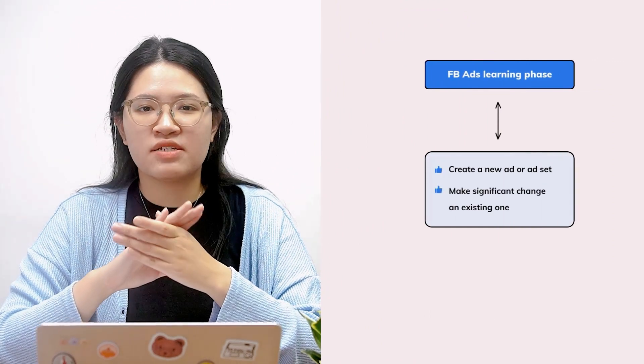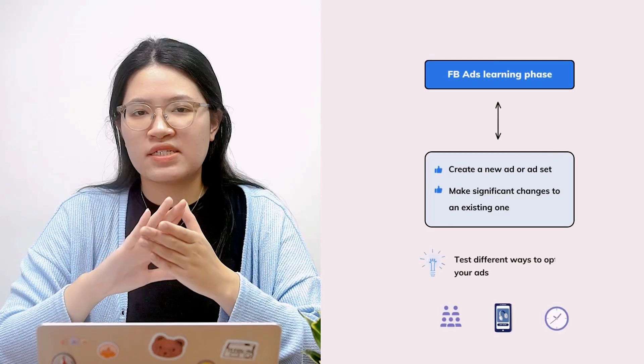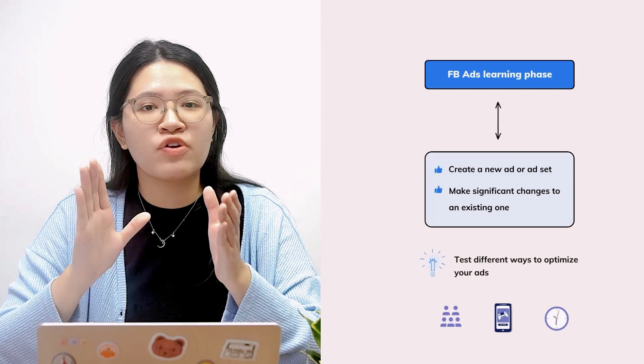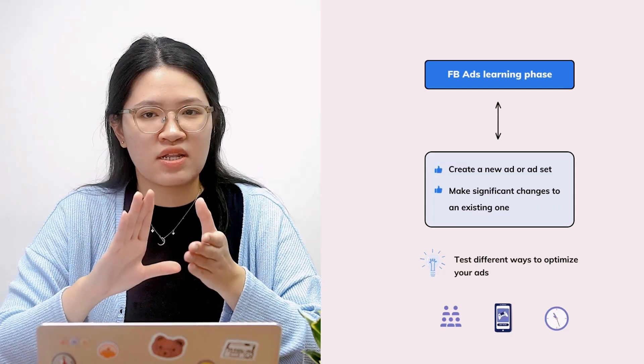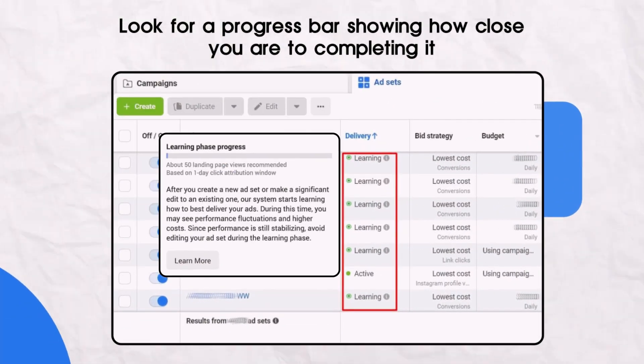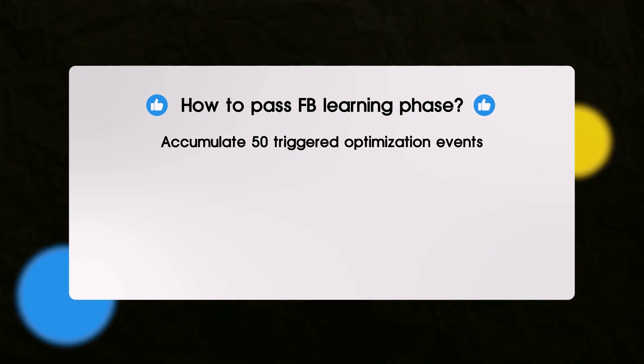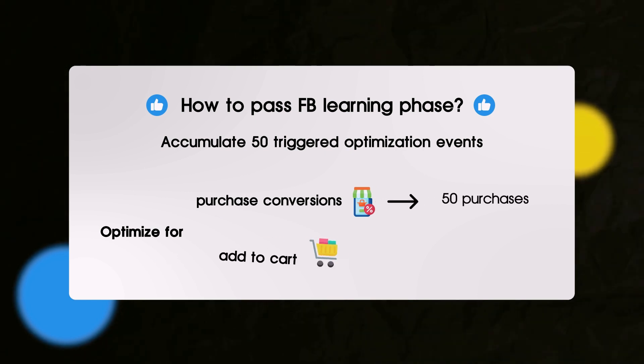The next reason for Facebook ads not delivering is the learning phase. It happens when you create a new ad or ad set or make significant changes to an existing one. During this phase, Facebook tests different ways of optimizing your ads to find the best combo of creative, audience targeting, time, and placement for maximizing conversion. That's why your ad performance may be less stable and your cost per result could be higher than expected. Facebook requires you to accumulate 50 triggered optimization events to exit this phase.